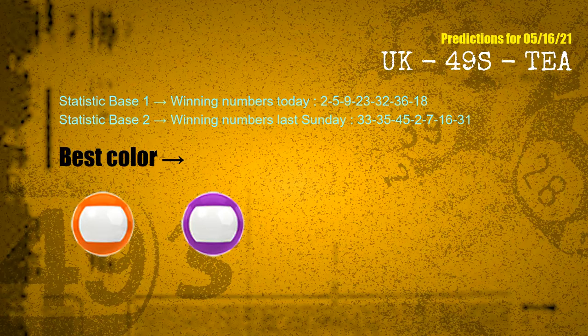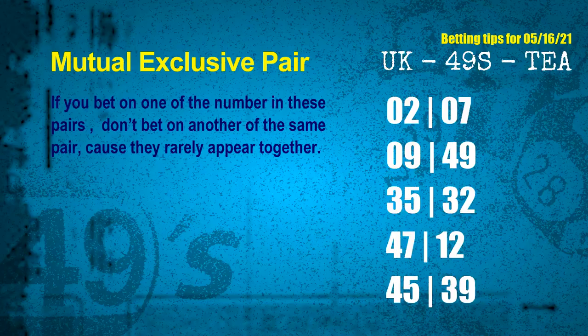According to the statistics above, with winning numbers today 02, 05, 09, 23, 32, 36, 18, and winning numbers last Sunday 33, 35, 45, 02, 07, 16, 31 — the frequent following colors are orange and purple. Now we have some following ones and ball colors. Here are some tips to increase hit odds, such as mutual exclusive pairs.